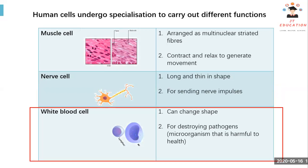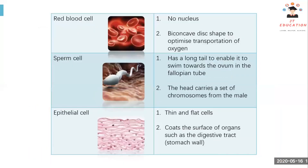White blood cells can change shape, and their function is to destroy pathogens, which plays a huge part in our body's immune system. A pathogen is a microorganism that is harmful to the human body.